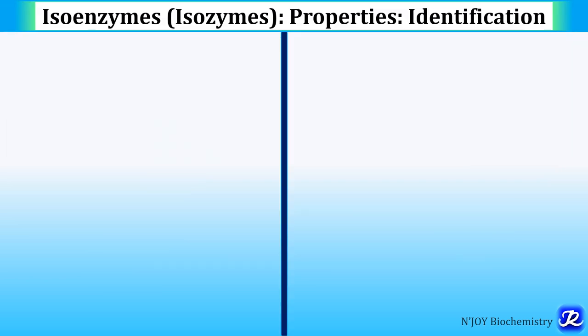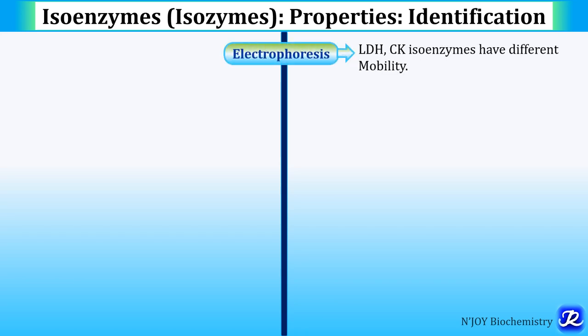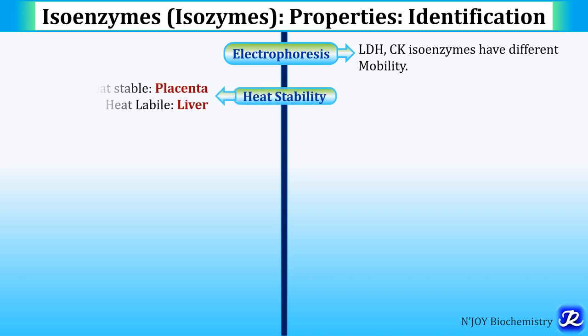Isoenzymes have different properties and based on those properties, isoenzymes can be identified. The electrophoretic mobility for different isoenzymes of LDH and creatine kinase is different. Heat stability is also different.